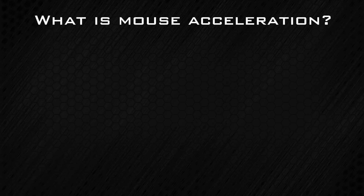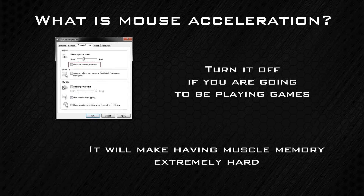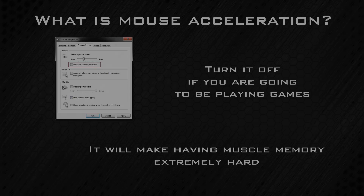What is the setting called Mouse Acceleration? When I have it turned on, my mouse movement keeps acting weird. Mouse Acceleration makes it so that if you quickly move your mouse, it will move your cursor much farther than if you were to move your mouse slowly. This makes muscle memory extremely hard, and I suggest that you turn the setting off.